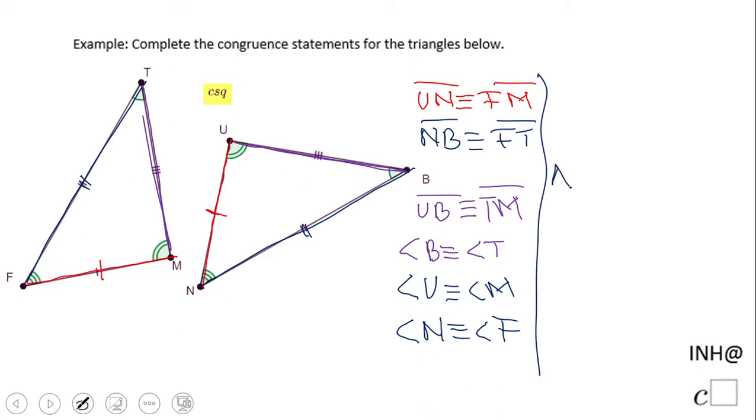Okay, so then we say triangle BUN congruent. And here is the second triangle. You really need to follow the corresponding sides. So you can look at angles. That is one way. So I get the corresponding sides. T corresponds to B, M corresponds to U, and F corresponds to N. That is a correct way to write.